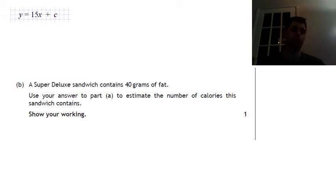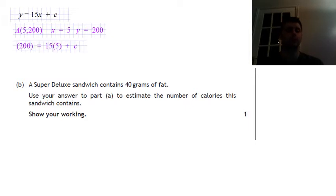To work out c, we need another point, and we can sub it in and then see what happens. So I just picked the first point. So A was 5, 200. So I said x at that point, x is 5 and y is 200. If we sub that back into the equation, we end up with 200 equals 15 times 5.